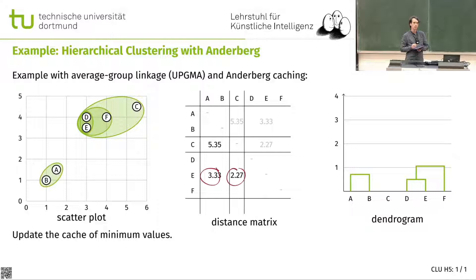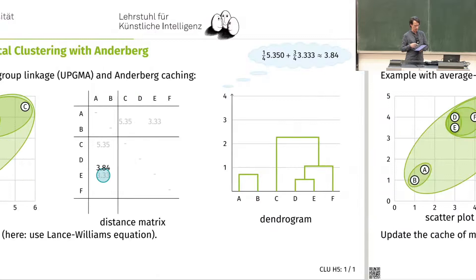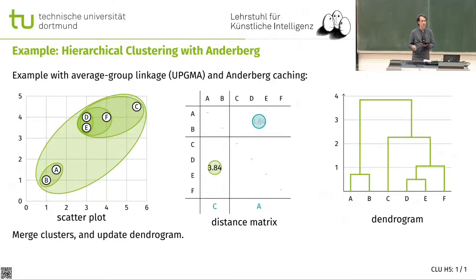Now everything is affected because these are my new minima, and hence we need to recompute the entire cache on this tiny matrix. We can continue the remaining step. Questions on Anderberg? It's a very nice algorithm because I just need to add this cache array and it usually saves me an O(n) runtime.